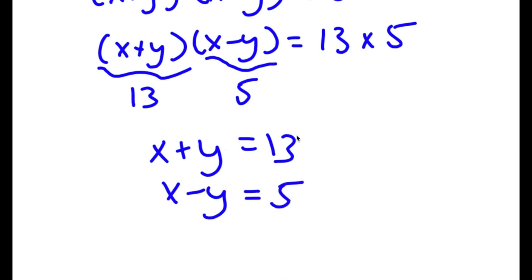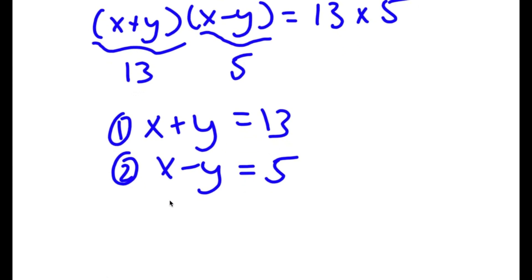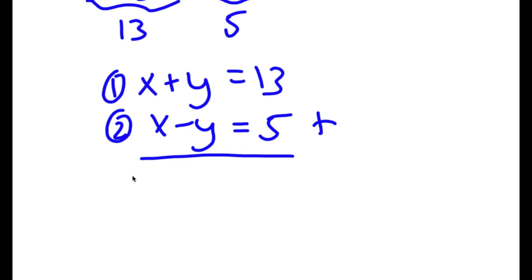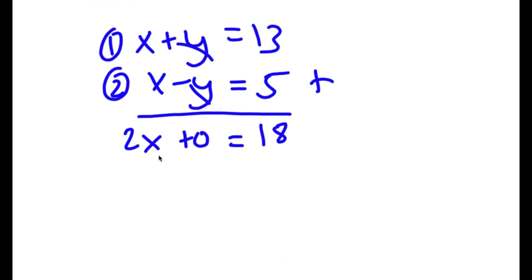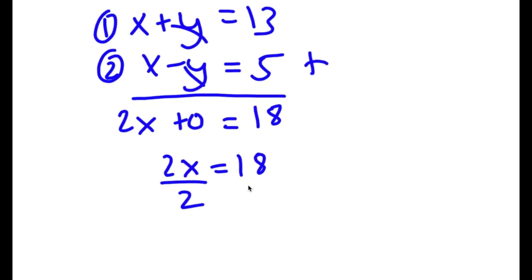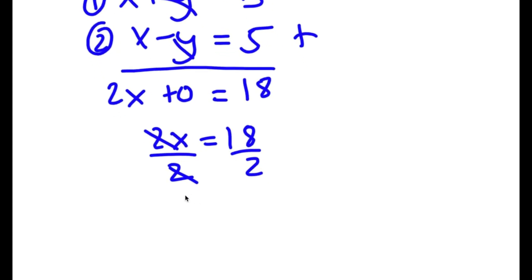So now here we have a system of equations: equation one is x plus y equals 13, and equation two is x minus y equals 5. We want to find the values of both x and y. To do this we are going to add both equations. x plus x is 2x, y minus y cancels out, and 13 plus 5 is 18. So 2x equals 18, and dividing both sides by 2 gives x equals 9.